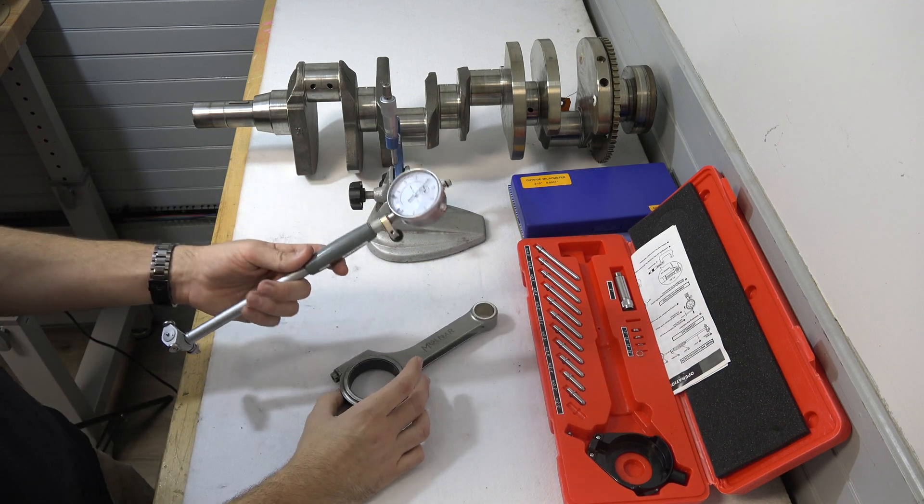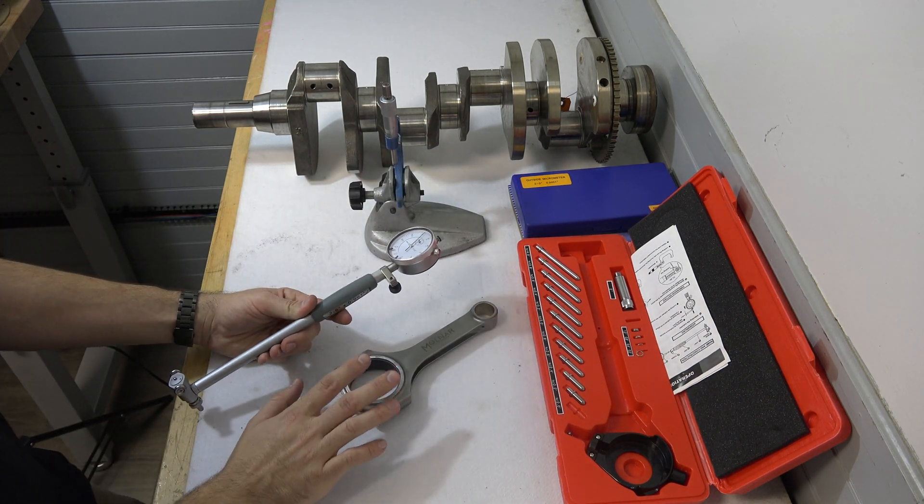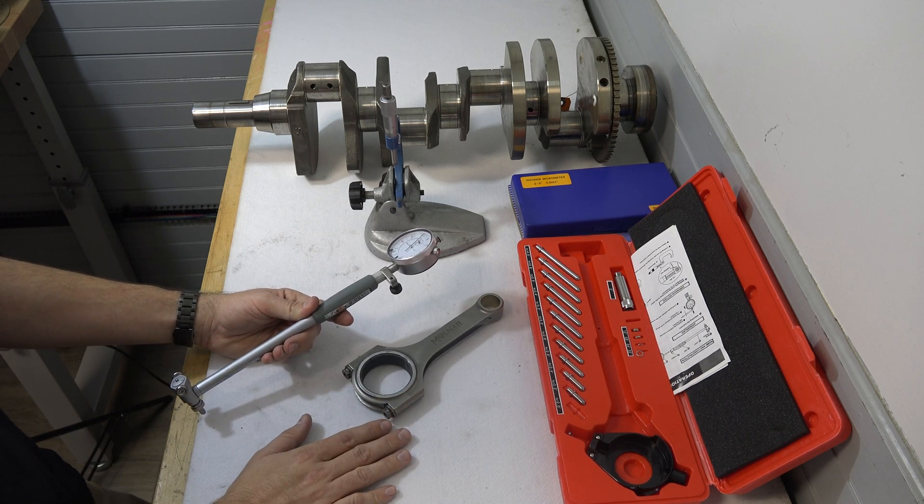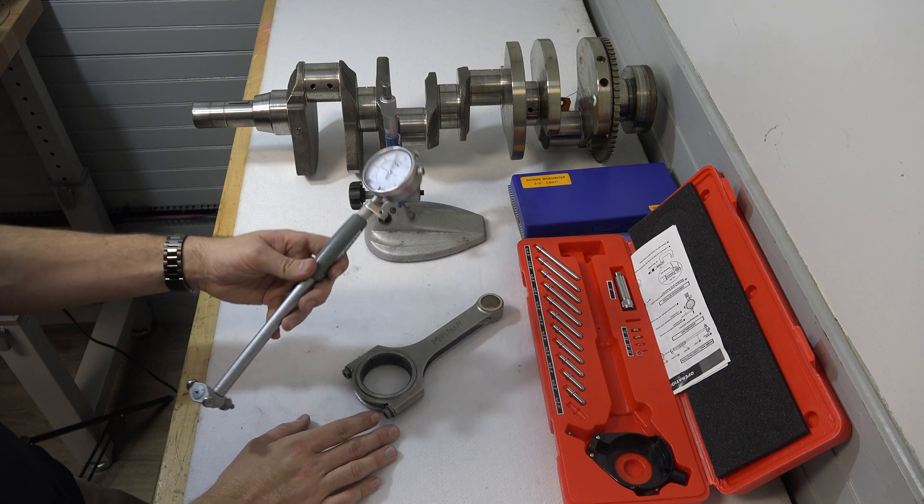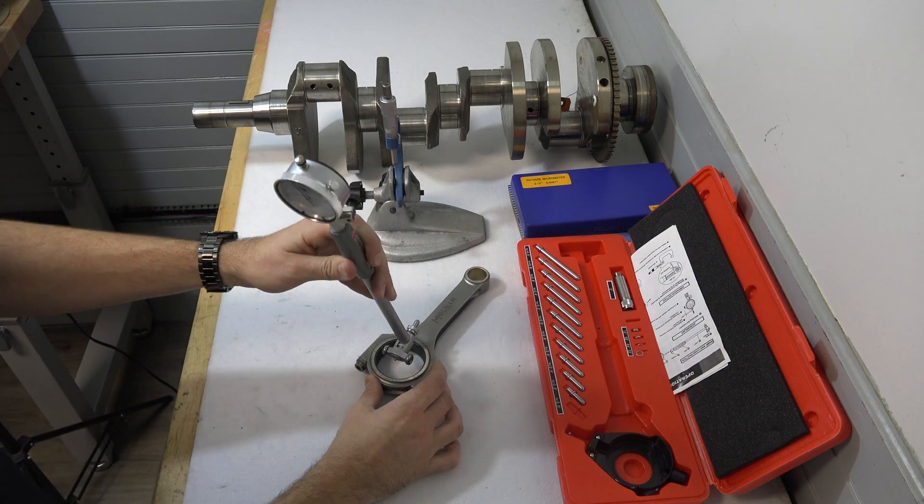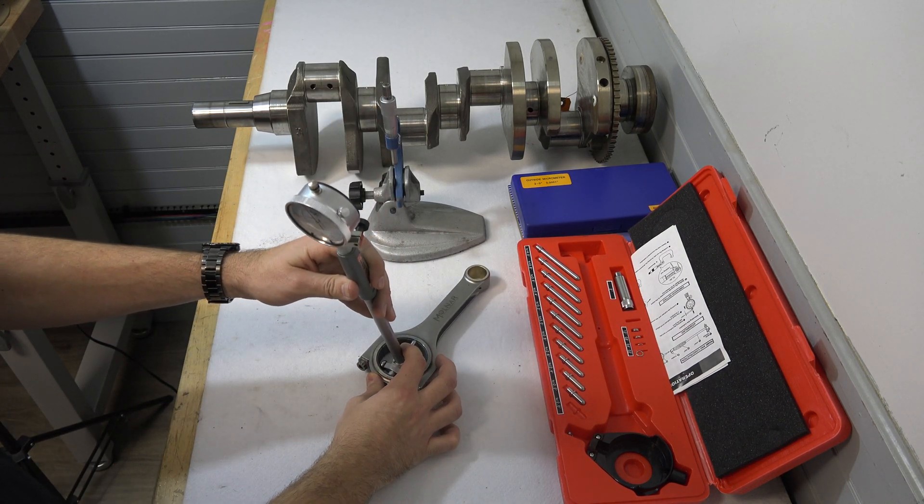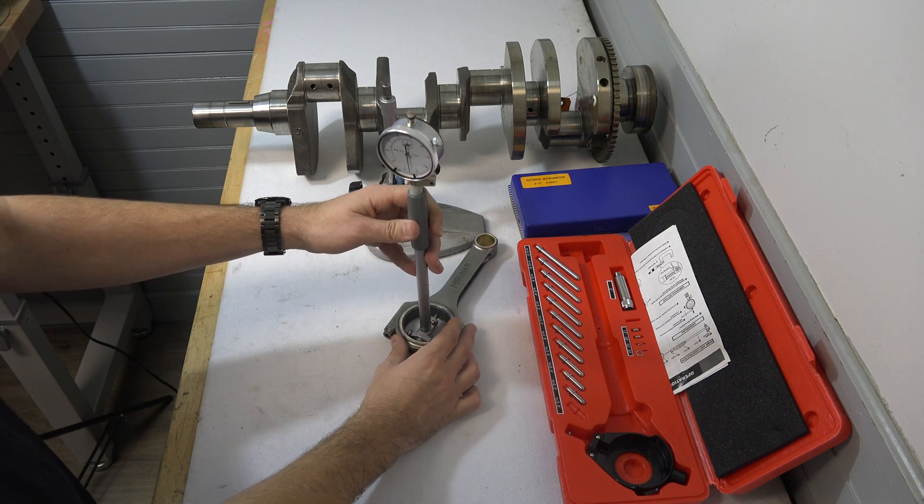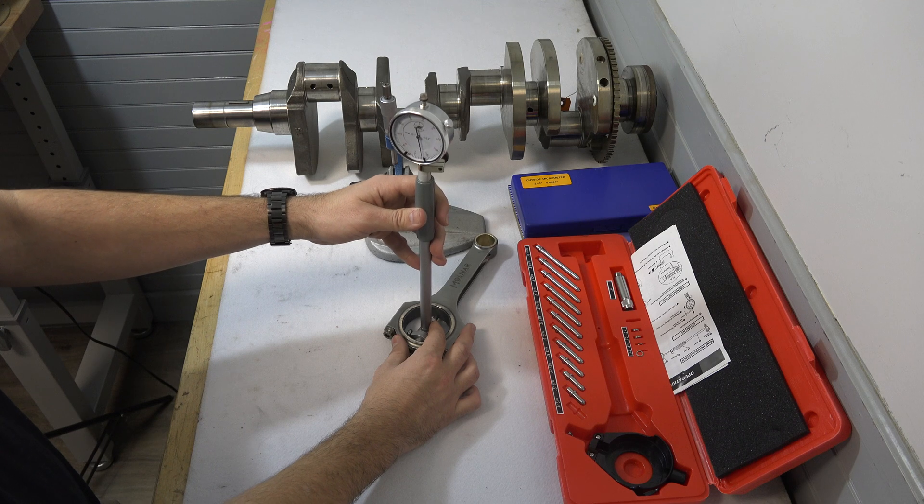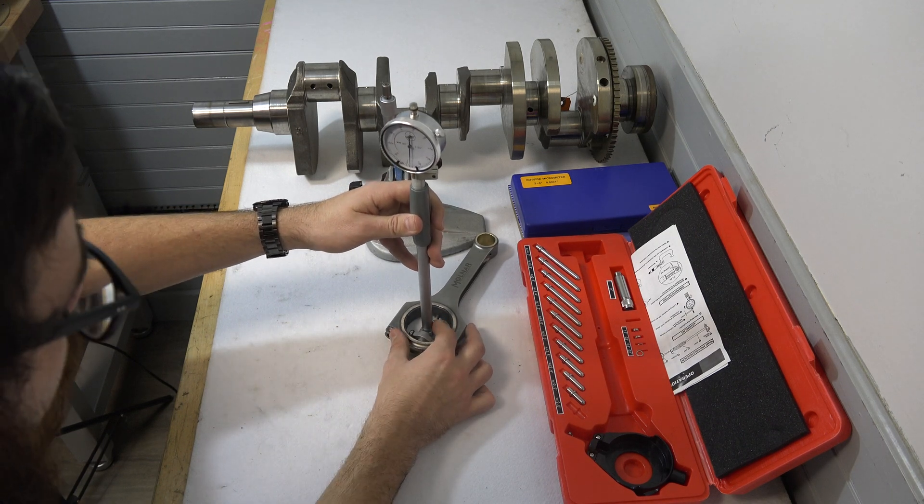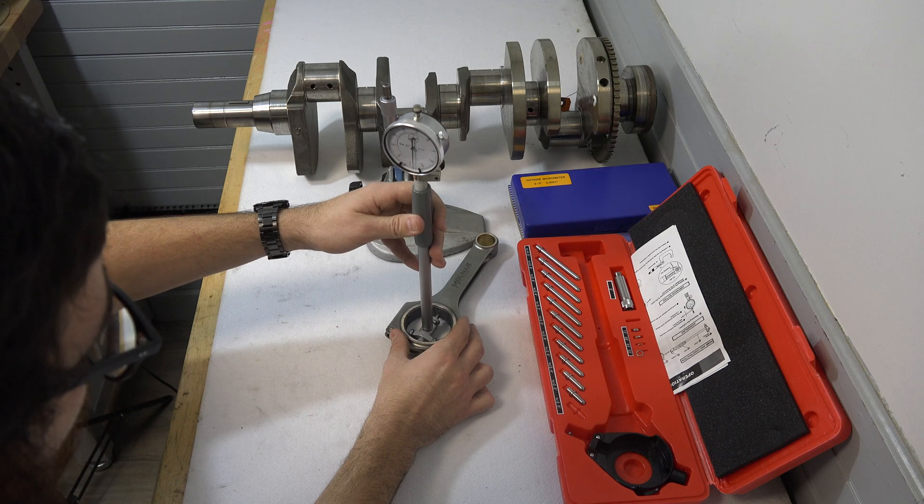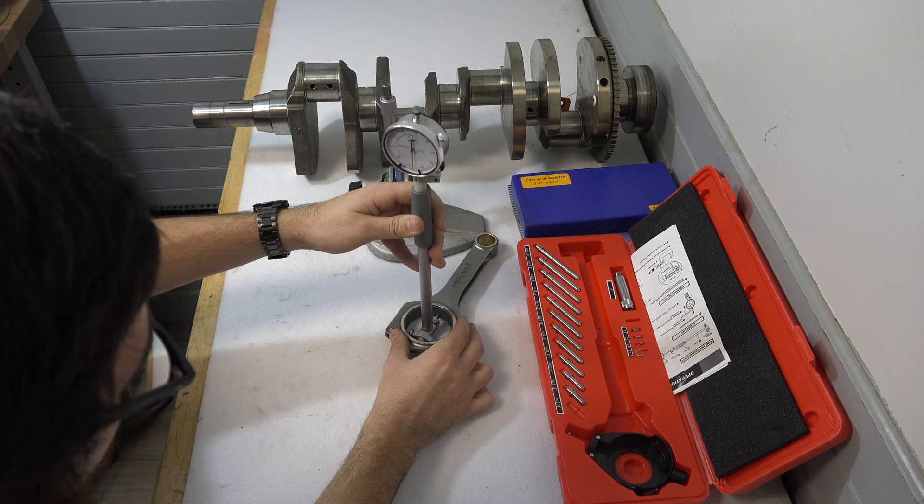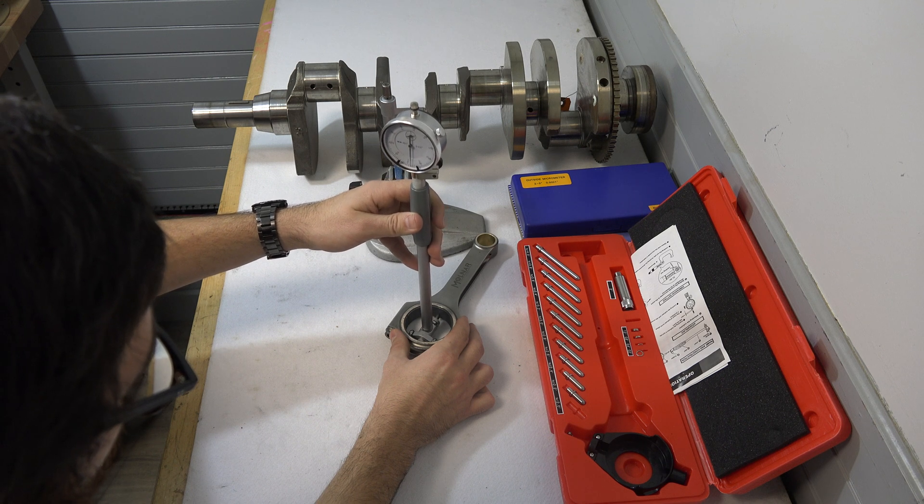Now what we have here, we have our connecting rod that already has our bearing installed in it and we've already torqued our rod bolts here. So that's absolutely critical that the rod bolts be torqued. So we're going to take our dial indicator and very carefully put it into our rod with the bearings already in it and we are going to sweep back and forth. I'm looking at right just under two and a half thousandths, which is perfect.